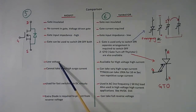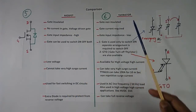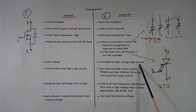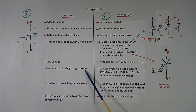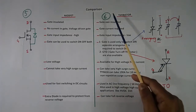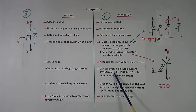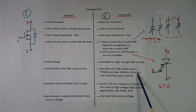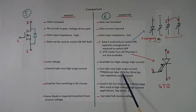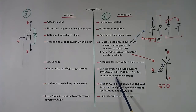MOSFETs are designed for low voltage; thyristors handle high voltage and high current also. MOSFET cannot take very high surge current, but thyristor can take very high surge current. For example, the TYN616 — normal current is 16 Ampere, but for surge current it can take 190 Ampere for 10 ms, non-repetitive. Means if you flow 190 Ampere for 10 ms, you have to wait till it cools down — so it is called non-repetitive surge current.